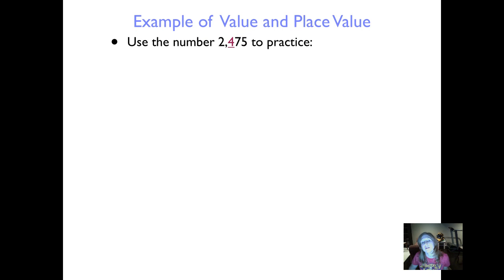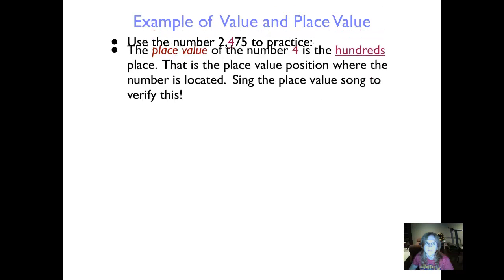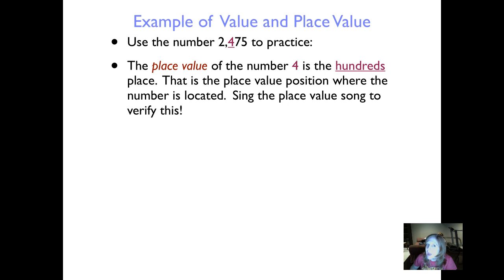Here are some examples of value and place value. We're going to use the number 2,475 to practice. I underlined the number in the hundreds place. The place value — remember that's the address — of the number 4 is the hundreds place. We can sing the place value song to verify this. Starting from the right end of the number: ones for the 5, tens for the 7, and hundreds for the 4. So the 4 is in the hundreds place, and we can stop right there — we don't even have to sing the whole song.